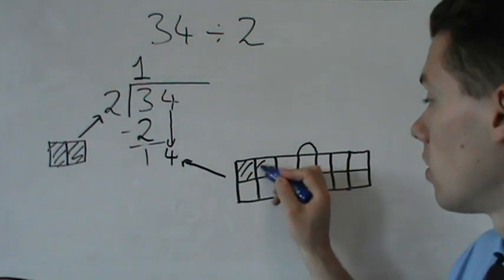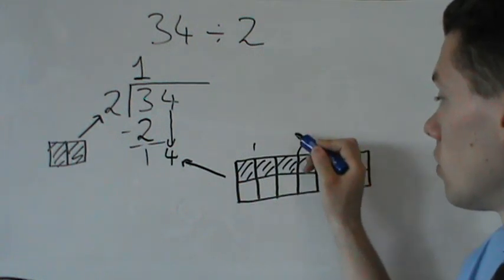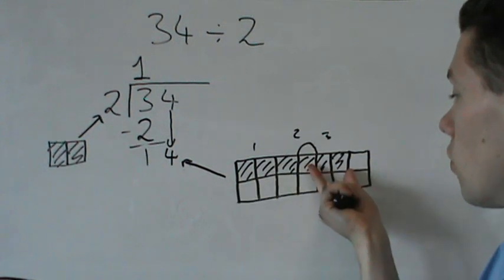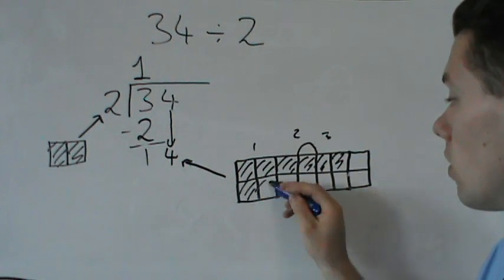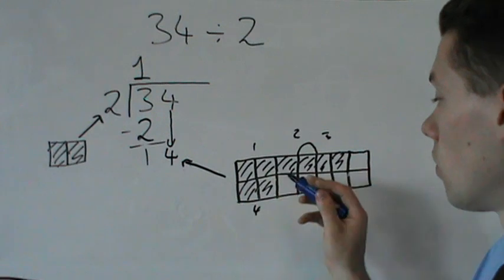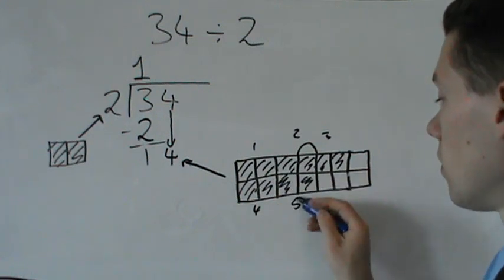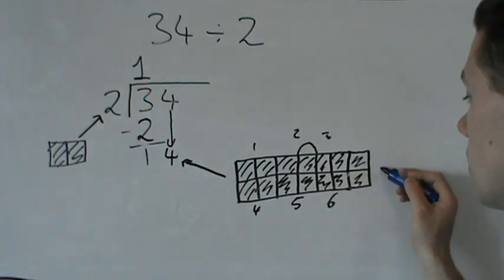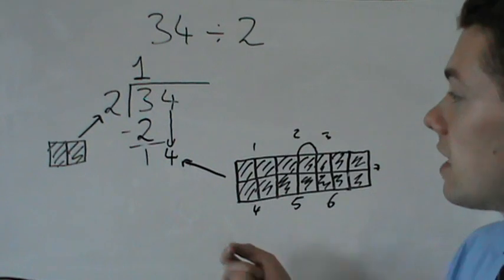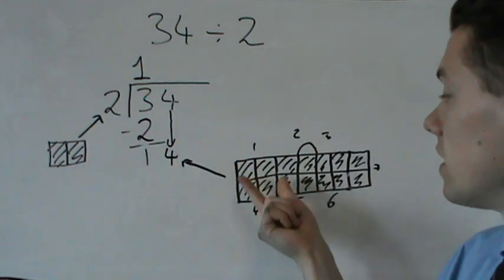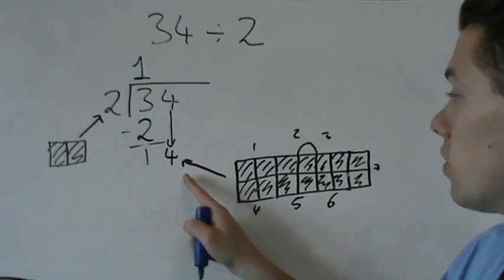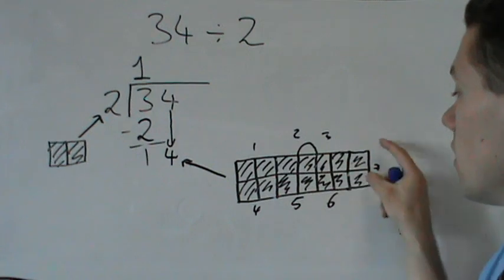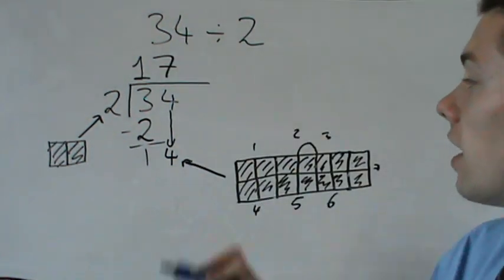We've got, that's 1, 2, 3. So 1, 2, 3, 4, 5, 6, finally 7. So 7 twos fit inside 14. This was our 14 size suitcase. 7 twos, 1, 2, 3, 4, 5, 6, 7. 7 twos fit inside 14.